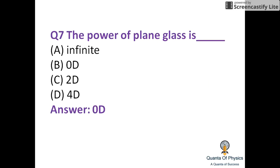The power of a plane glass is 0 D. D stands for diopter, which is the unit of power of a lens, glass, or mirror.